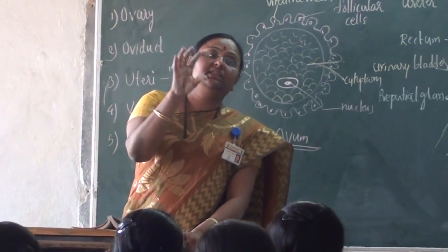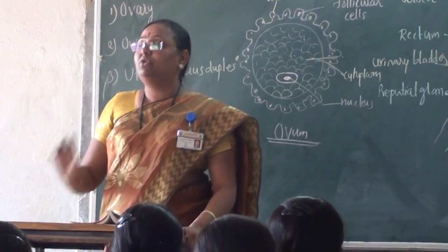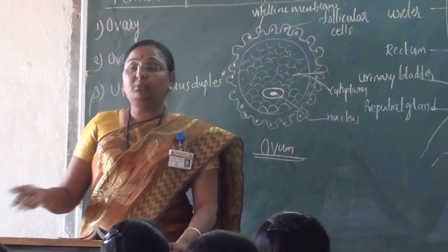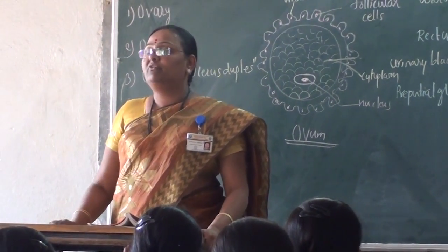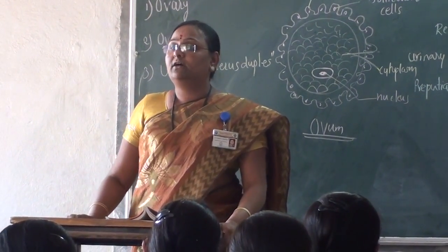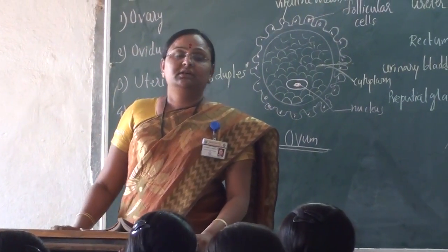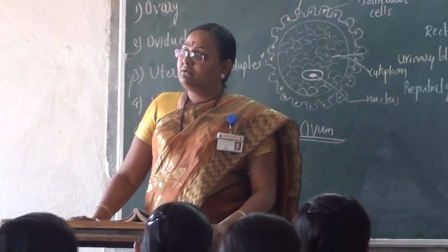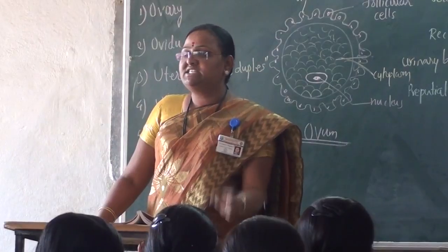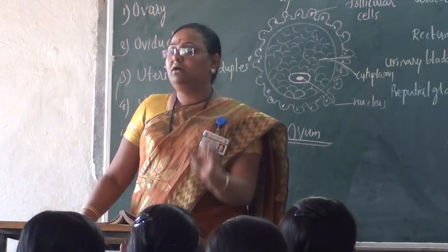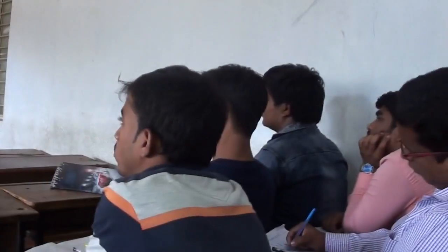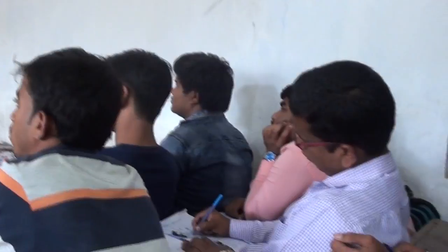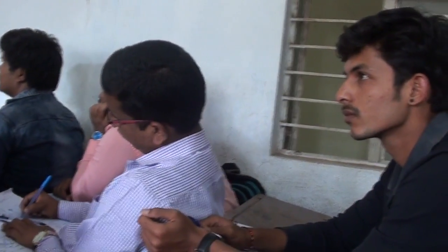The ovary shows so many stages of follicle development: primary follicle, secondary follicle, Graafian follicle, and vesicular follicle. These different types of follicles can be identified in the ovary.